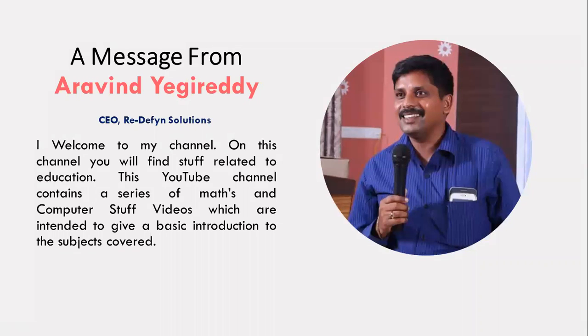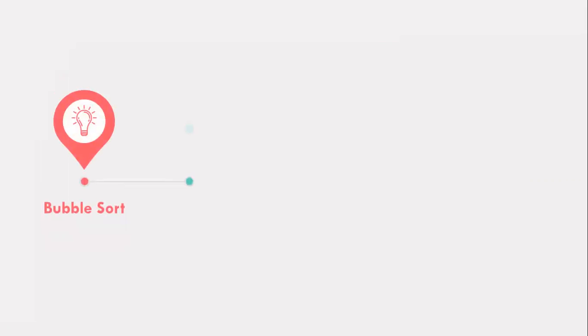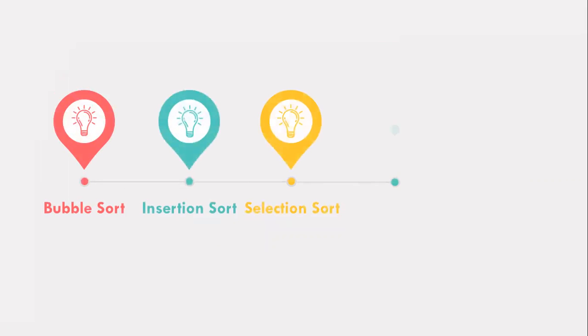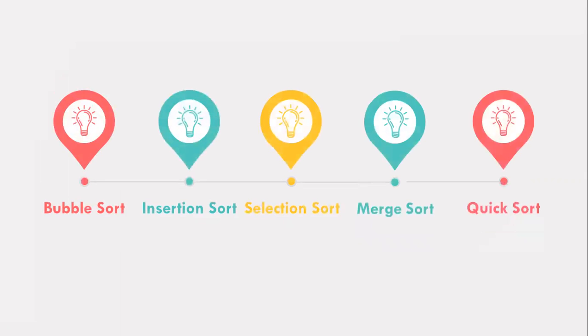Before the era of internet, when we want to look up a word in a dictionary, we would do so in alphabetic order — that made it very easy. In this video, we are going to discuss bubble sort, insertion sort, merge sort, quick sort, and selection sort.